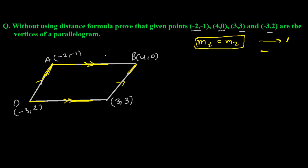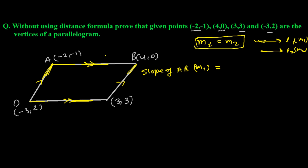If line L1 has slope m1 and line L2 has slope m2, both lines are parallel if m1 equals m2. This is the condition of parallelism we learned. So let's find the slope of each side. Slope of AB — let's call this m1.